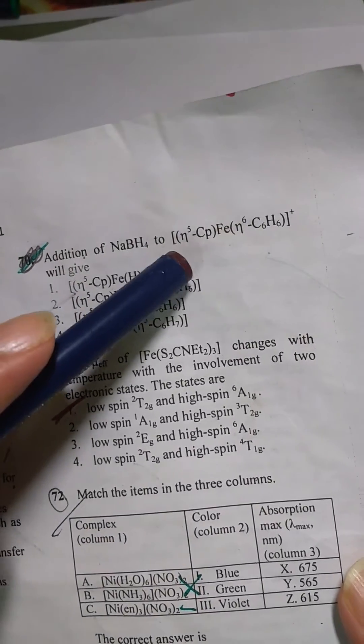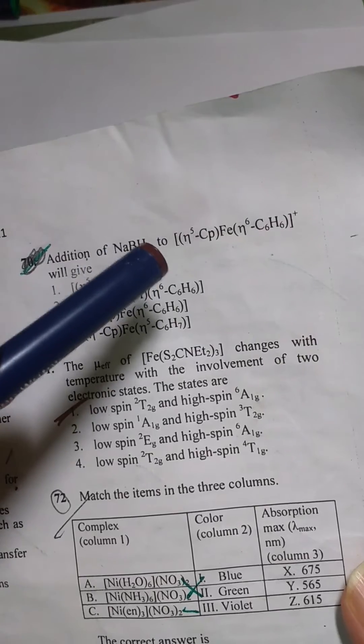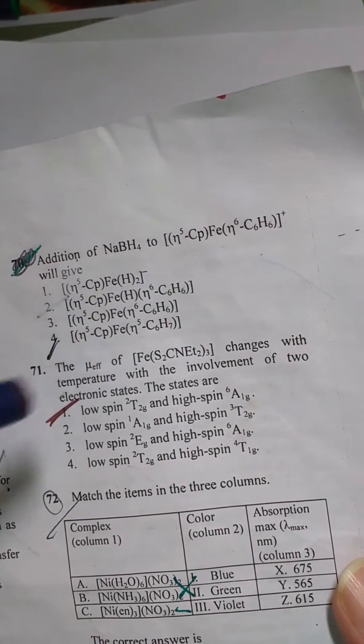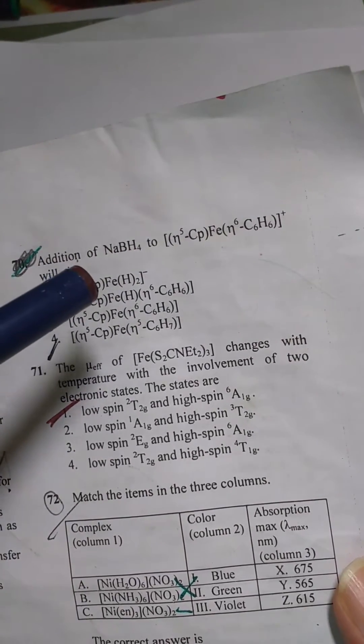most likely in all respects obey the 18 electron rule and for them the 18 electron rule is valid and it is extremely stable. The sandwich compounds follow 18 electron rule basically. So an 18 electron sandwich compound will be extremely stable.